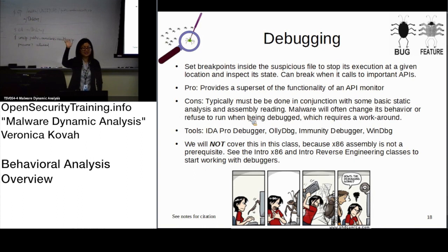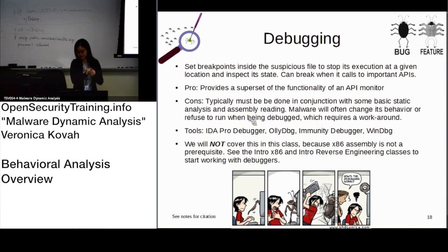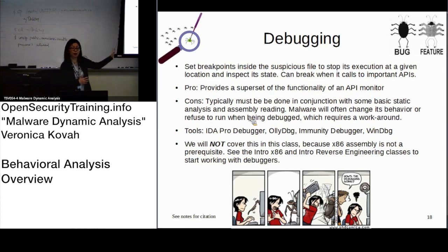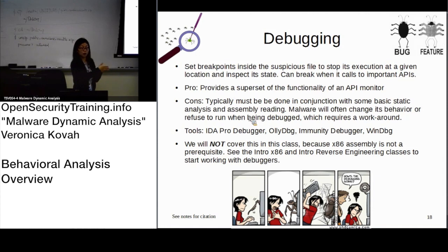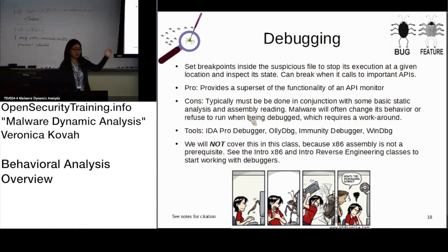As for debugging, we are not going to do it in this class because it requires additional knowledge — you need to be familiar with assembly language, and that is one of the main reasons it is excluded since assembly is not a prerequisite. However, debugging is one of the best ways to observe malware behavior. You can set breakpoints while code is running and see what's going on in very fine detail. In the reverse engineering malware class, they use debugging not only for static analysis but also for manually unpacking malware using a debugger.